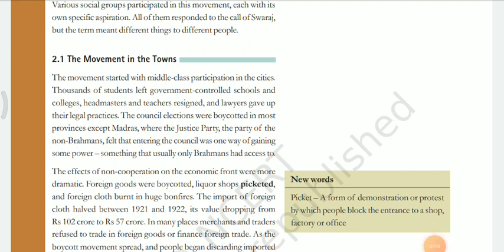The movement started with middle-class participation in the cities. Thousands of students left government-controlled schools and colleges, headmasters and teachers resigned, and lawyers gave up their legal practices. The council elections were boycotted in most provinces except Madras, where the Justice Party — the party of non-Brahmans — felt that entering the council was one way of gaining power, something usually only Brahmans had access to.